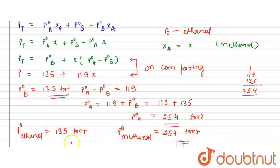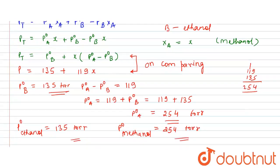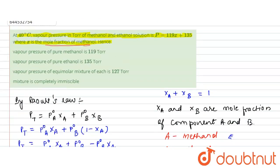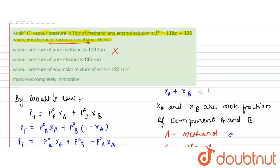Checking the options: the vapor pressure of pure methanol is 254 Torr — the first option is correct. And the vapor pressure of pure ethanol is 135 Torr — that option is also correct, as we calculated.